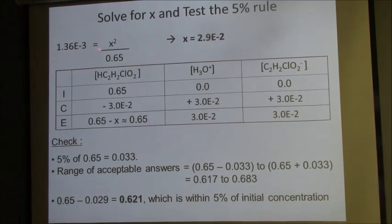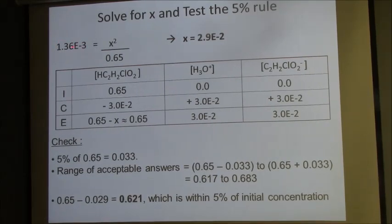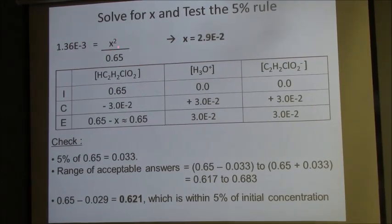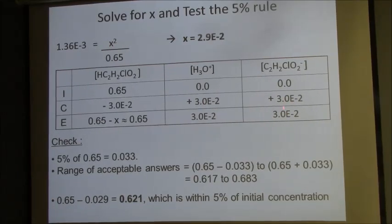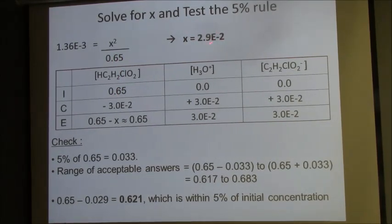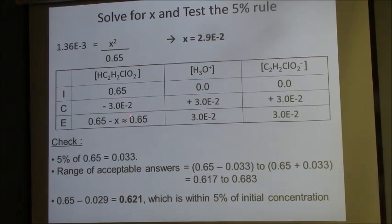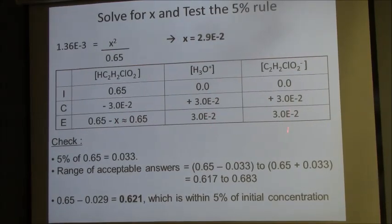Since I was given the value of K in the problem, now I just plug in X squared, because this was X and this was X, and we're going to use 0.65 as the bottom number. When we do our math, we come up with 2.9 times 10 to the negative second. When we plug in that value of X, we're not going to subtract it out here, we add it.